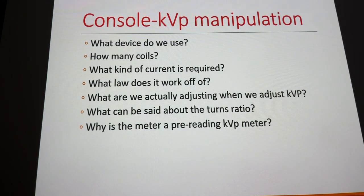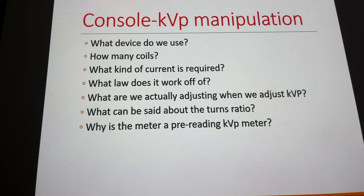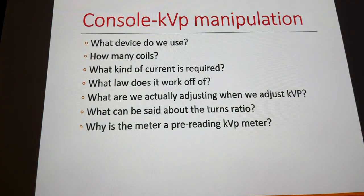The voltage change is directly related to the change in turns ratio between the primary and secondary sides. If we increase the number of turns on the secondary side, voltage goes up; if we decrease them, voltage goes down. So when we adjust KVP, we're adjusting the contacts on the secondary side of the auto transformer. The turns ratio is variable — we can increase or decrease it.